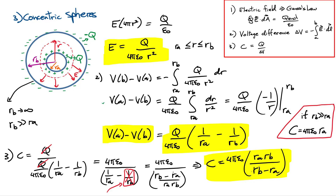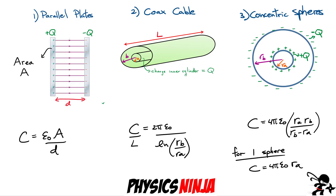Here's our summary. For parallel plates, capacitance is epsilon zero times A divided by d. For coaxial cable, the capacitance per unit length C over L equals two pi epsilon zero divided by the natural log of R_B over R_A. For concentric spheres, capacitance is four pi epsilon zero times R_A R_B divided by (R_B minus R_A). In all cases, epsilon zero represents the material between the conductors — we could have put a dielectric in there — and the remaining terms represent the geometrical factor. Taking the limit where R_B goes to infinity gives the capacitance of a single sphere: four pi epsilon zero R_A. That's it, thanks for watching.